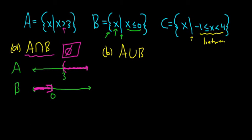So if you were to graph both of these sets on the same number line, it would look something like this. It means a different color. So here is 3, so this is A, and then here is 0, and this is B. Beautiful stuff. So this is the graph of A union B.